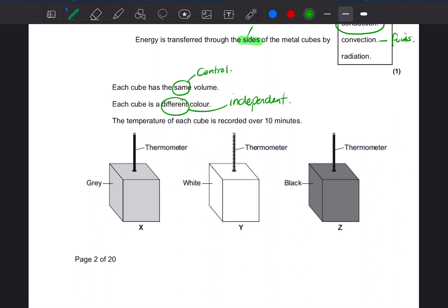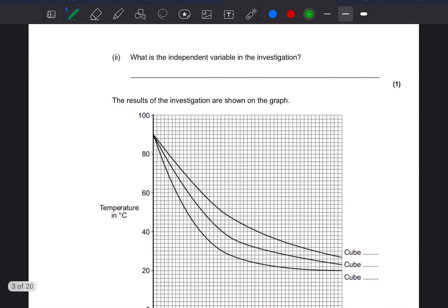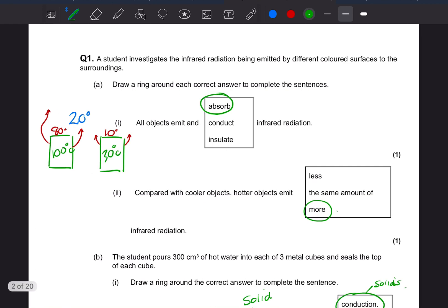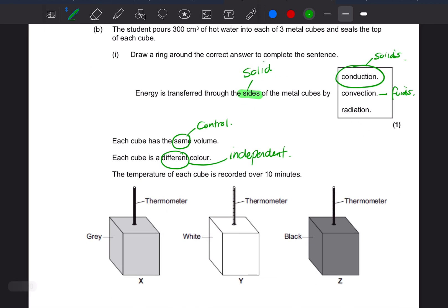The temperature of each cube is recorded over 10 minutes. So the temperature is going to be the dependent variable because the color will affect the temperature. What is the independent variable? We've already said that. It's the color, so in particular it's the color of the cube.